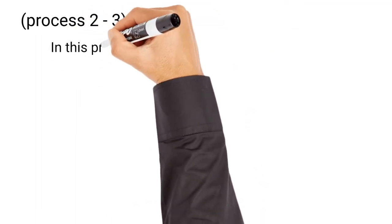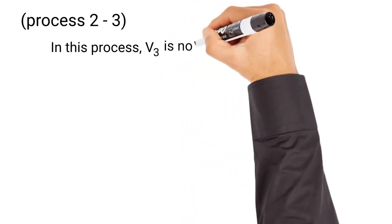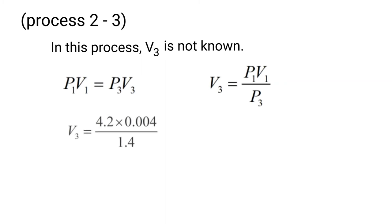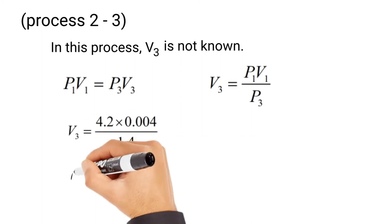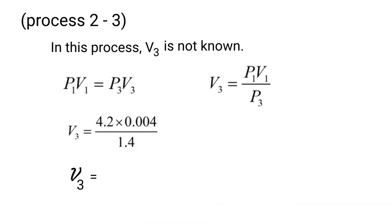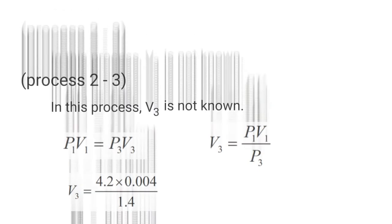Next is process 2→3. In this process, V3 is not known, so we need to find it first. Between process 3→1 the law is PV = constant, so we use P1V1 = P3V3. Making V3 the subject: V3 = P1V1 / P3 = (4.2 × 0.04) / 1.4 = 0.012 m³.